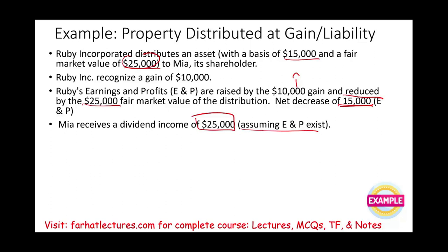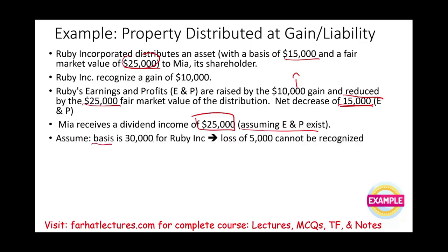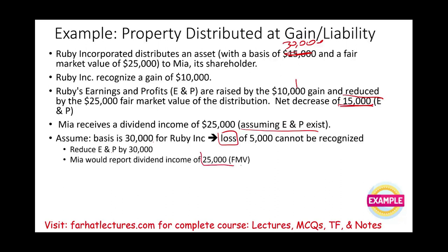Now let's change the scenario: assume the basis is $30,000. With a fair market value of $25,000, this asset has a loss of $5,000 — but Ruby cannot recognize the loss. What happens is E&P is reduced by the basis of $30,000. Mia would report a dividend of the fair market value of $25,000 — she doesn't care what the basis is. She received fair market value of $25,000, so that is her dividend amount.